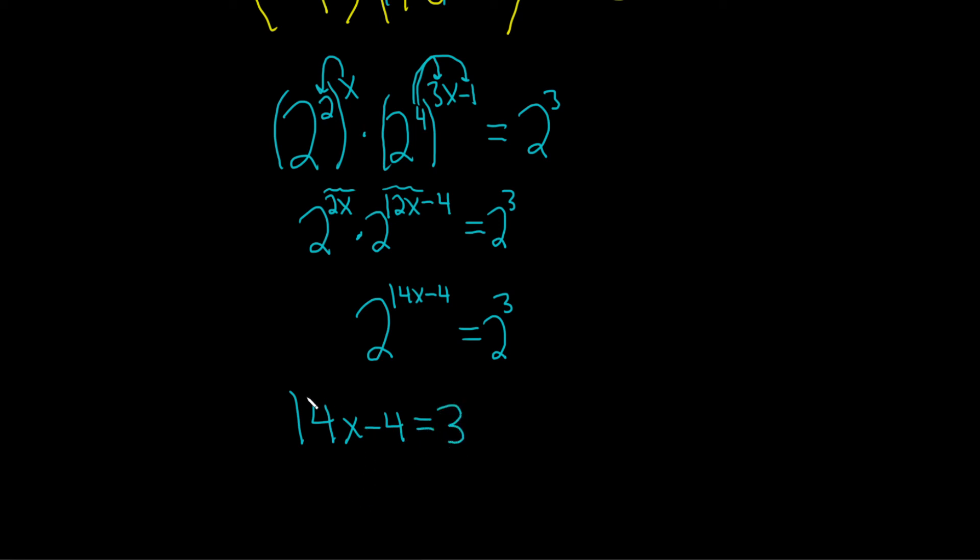To solve for x, we should try to isolate this 14x. So we'll add 4 to both sides. So plus 4, plus 4. These cancel, so we have 14x equals 7.